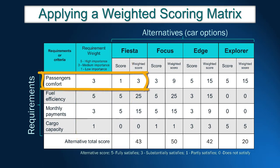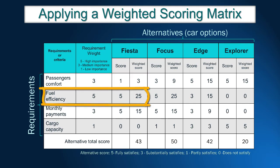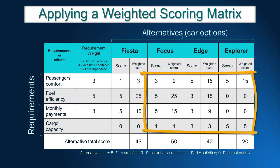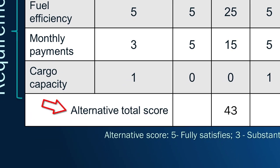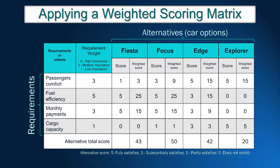After finishing the scoring for the Fiesta alternative, John needs to give scores for the remaining models. Once the scoring for all alternatives is finished, it is time to calculate the weighted score, obtained by multiplying the alternative score by the requirement weight. For instance, for passengers' comfort, Fiesta received score 1, so the weighted score is 3 × 1 = 3. For full efficiency, the weighted score is 5 × 5 = 25. The total weighted score for Fiesta is 3 + 25 + 15 + 0 = 43.